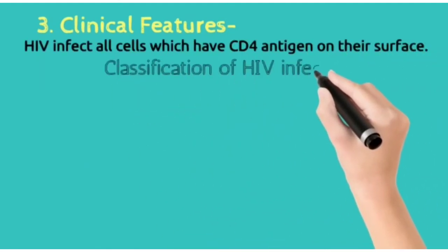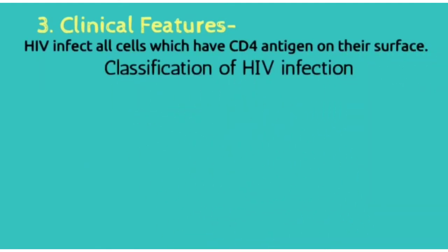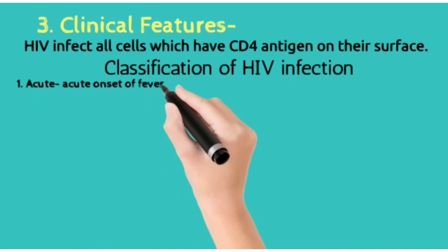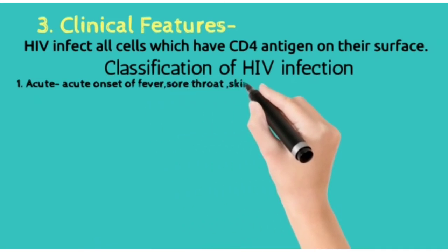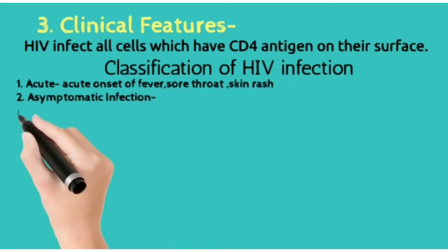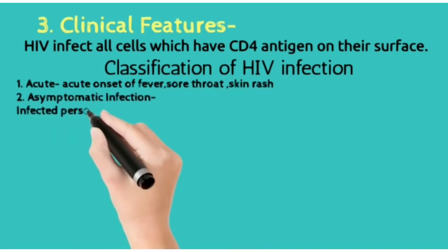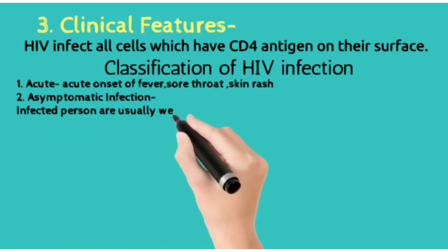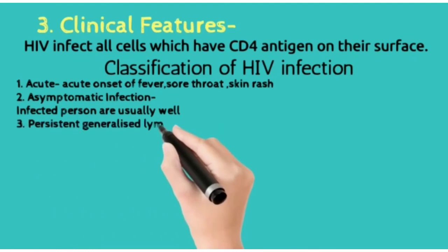About clinical features: HIV infects all cells which have CD4 antigen on their surface. The classification of HIV infection begins with acute, where there is acute onset of fever and skin rashes.